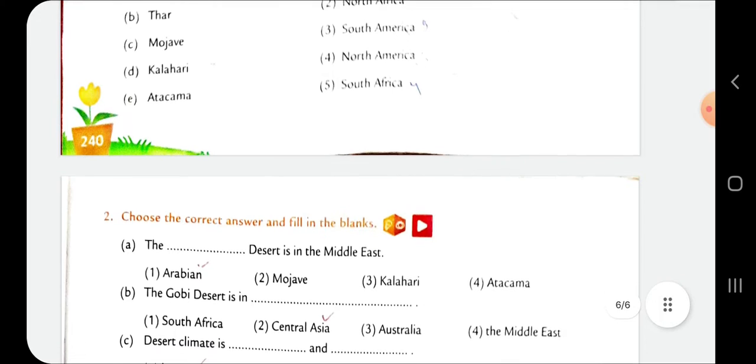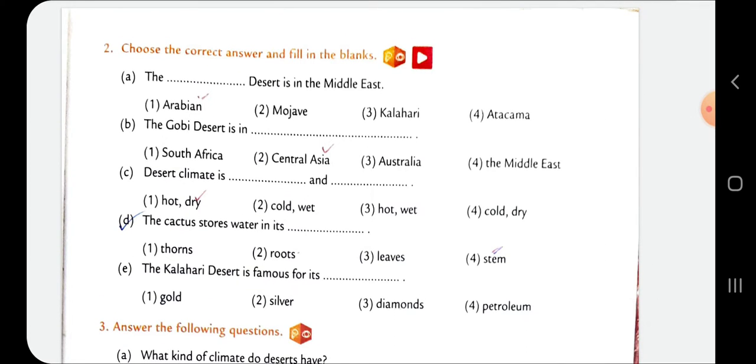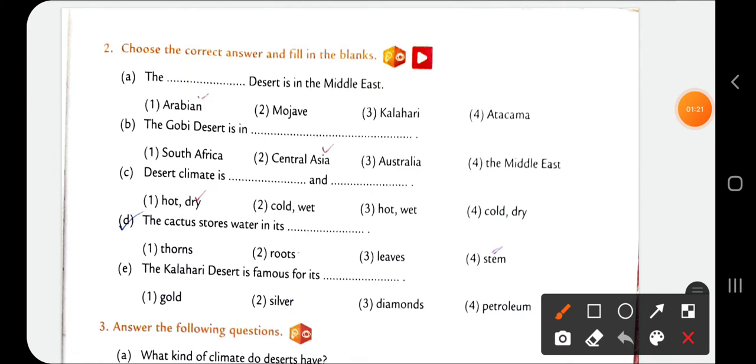Then comes the second type of question: Choose the correct answer and fill in the blanks. The Dash Desert is in the Middle East. The Arabian Desert is in the Middle East. We already learned about the resource part, but countries such as Saudi Arabia and UAE in the Middle East are among the richest countries in the world because of huge petroleum deposits found here.